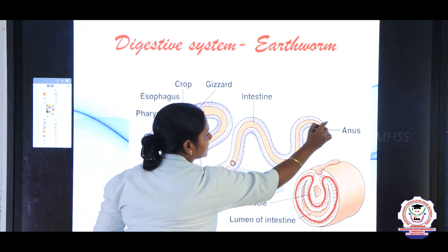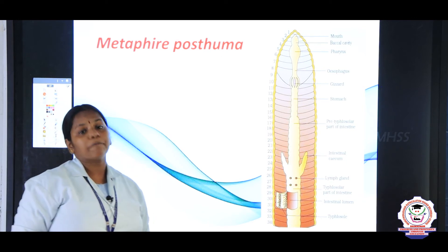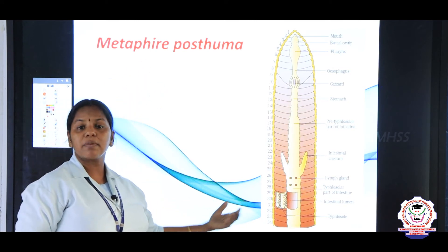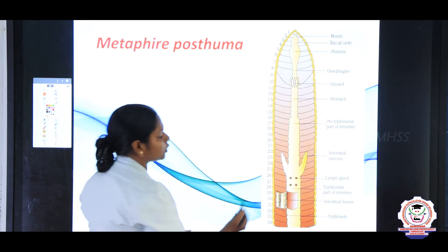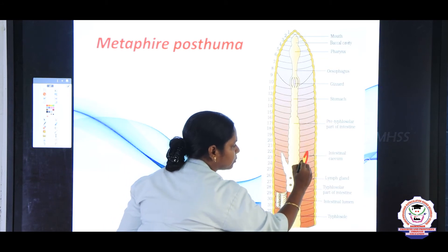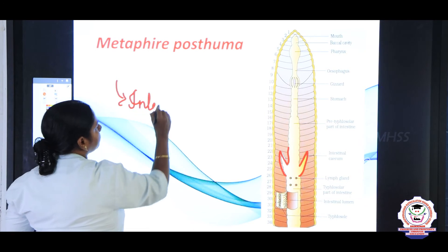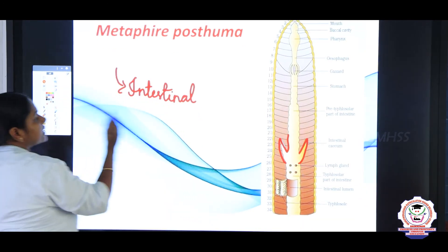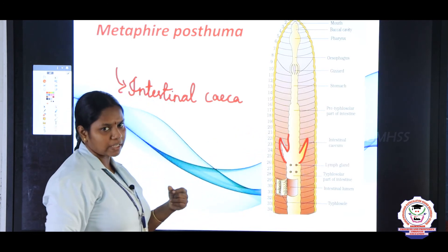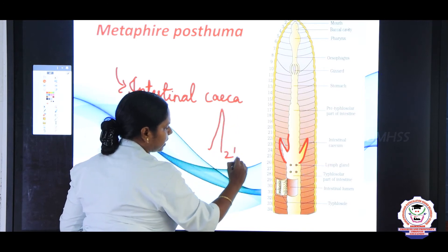In Lumbricus mauritii, the intestinal caeca is absent. But in another species, Metaphire posthuma, in the 26th segment there are small projections extending upward to the 22nd segment, called the intestinal caeca. These help in absorption. The intestinal caeca are present only in Metaphire posthuma and extend from the 26th segment upward to the 22nd segment.